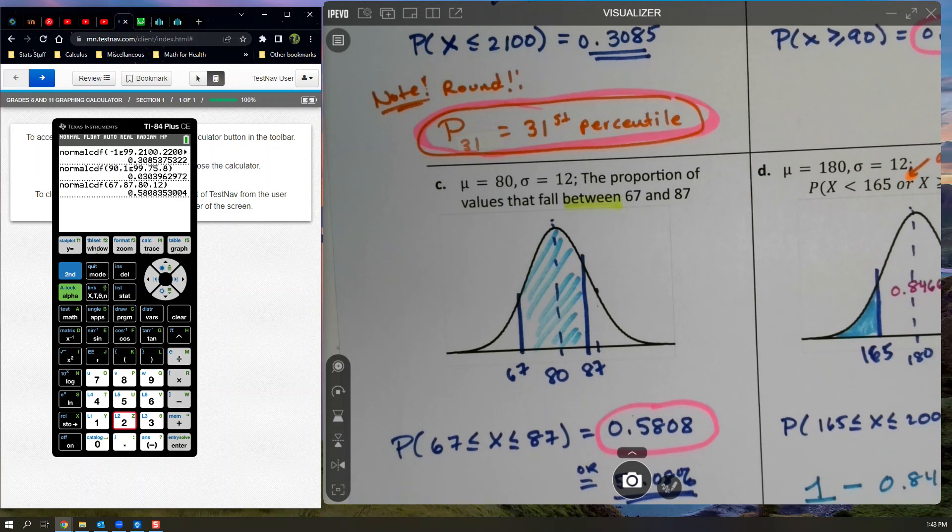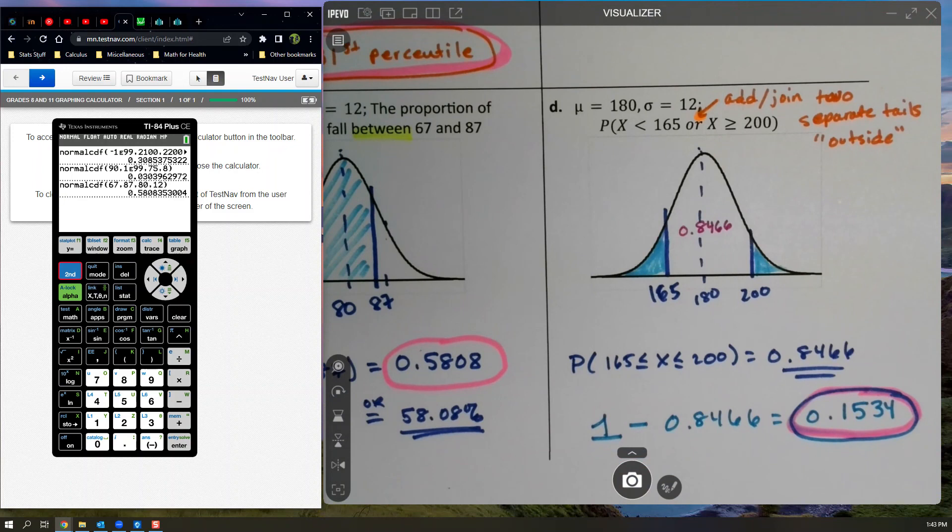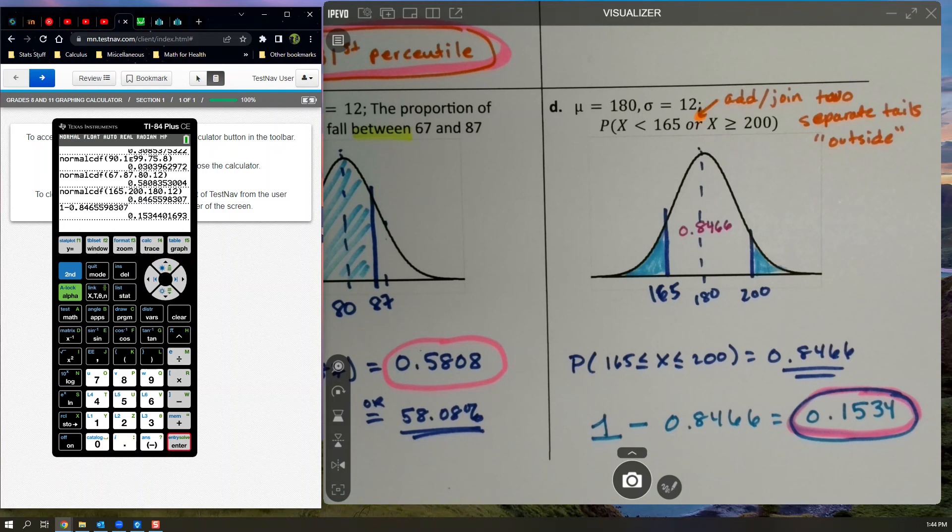And then the last one, you can actually do the exact same thing they did. That's kind of what you have to do. So second distribution, you're going to say 165, 200, 180, and 12. You'll find the central zone and then take one minus that answer. And there you have it. And there's no difference for an old calculator versus a new calculator. Not for normal CDF. They're all the same. It's inverse norm that gets tricky with the old different types of calculators.